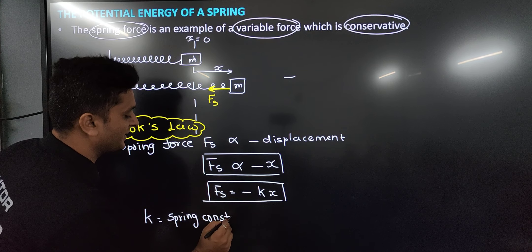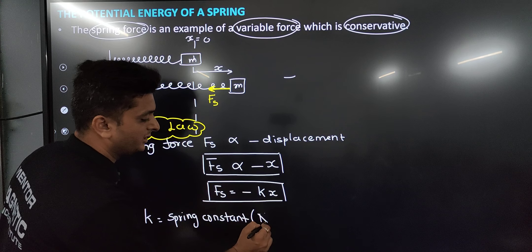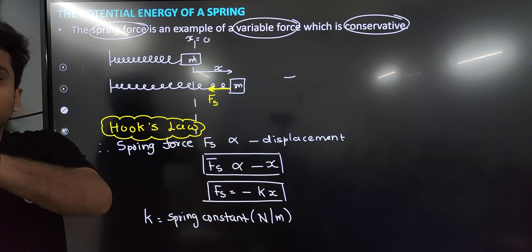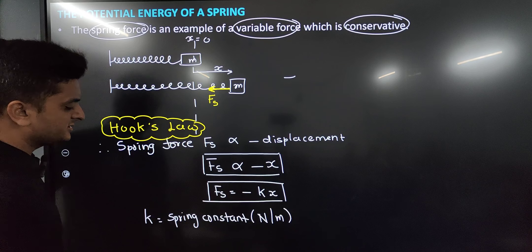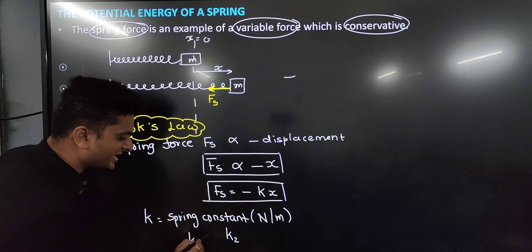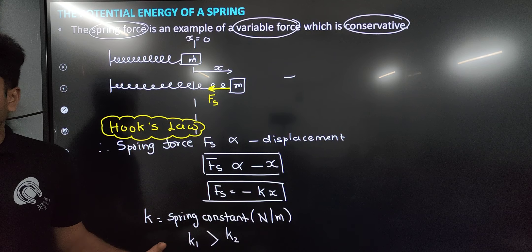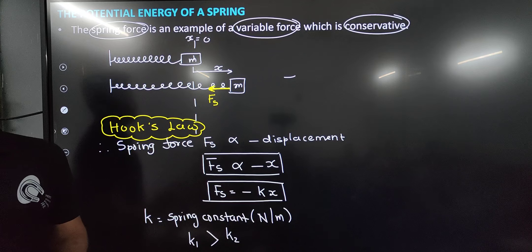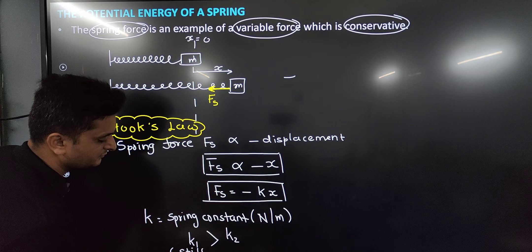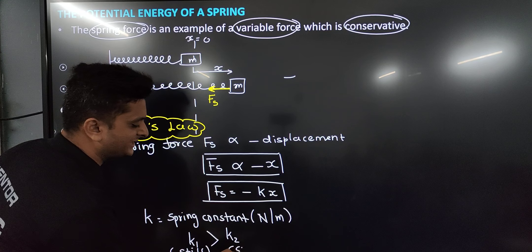What is the unit of the spring constant? Force divided by meter — that is Newton per meter. If you have two springs with spring constants k1 and k2, and k1 is greater than k2, then the spring with higher constant is called stiff, and the one with lower constant is called soft. A soft spring can be stretched or compressed easily.